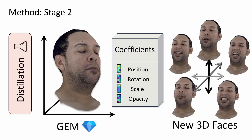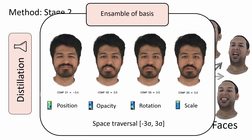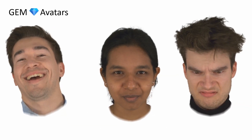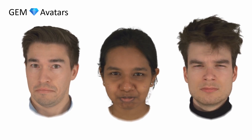Stage 2: based on the regressed sequence of Gaussian maps from stage 1, we employ our distillation process. Specifically, we create a separate PCA basis for each modality of the Gaussian maps. This ensemble of PCA bases contains the information for 3D position, rotation, scale, and opacity of the 3D Gaussians. GEM avatars obtained in this way are lightweight and high quality, making them well suited for downstream tasks.